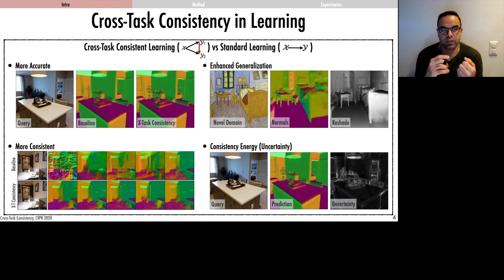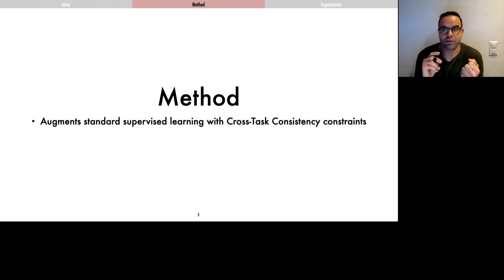Our method augments a standard supervised learning objective with cross-task consistency constraints. It's a fully computational and rather general method. The constraints are completely learned from the data, so there's no need to assume task relationships are known or differentiable.